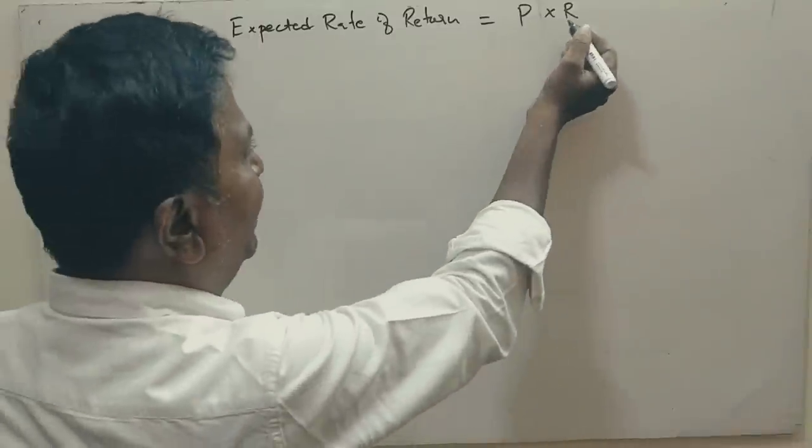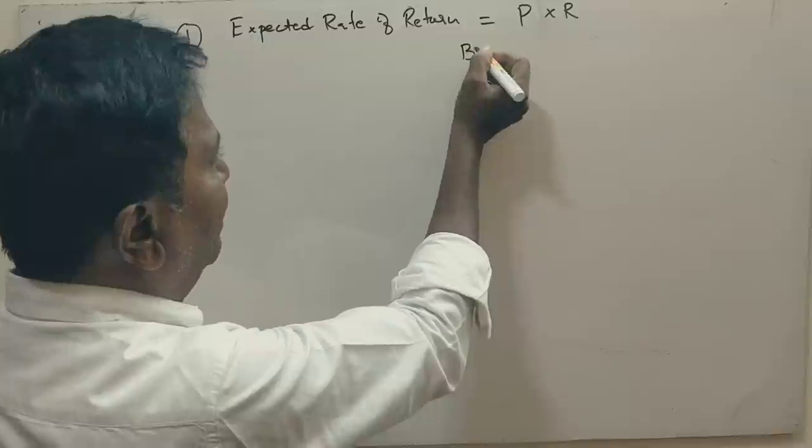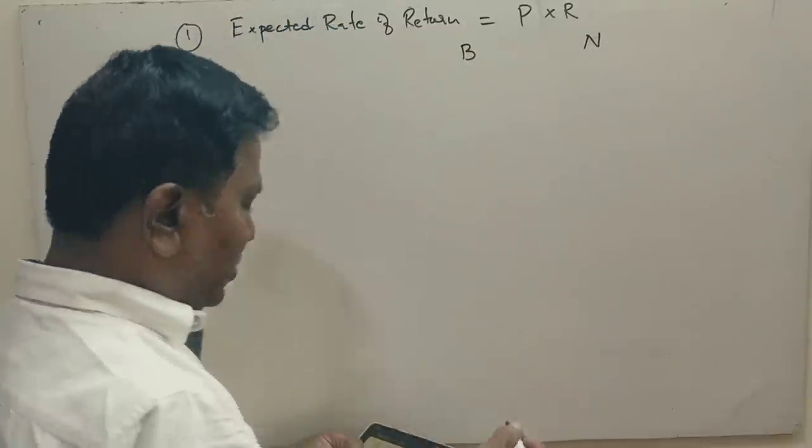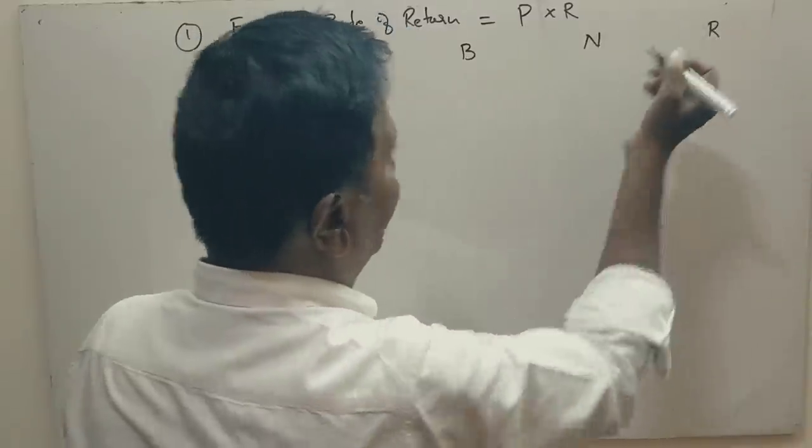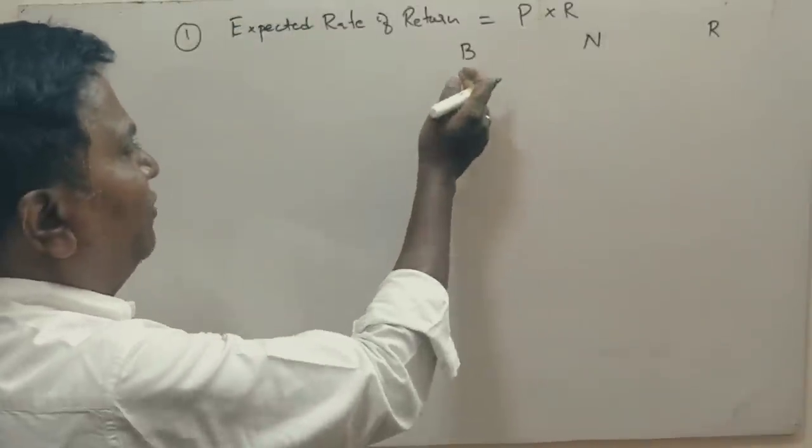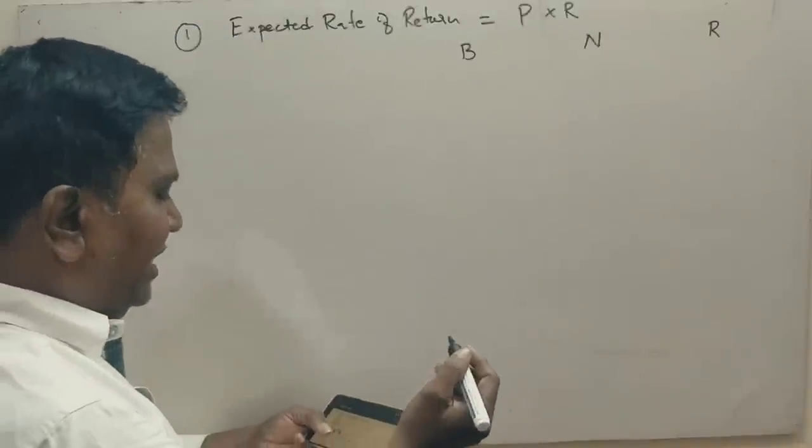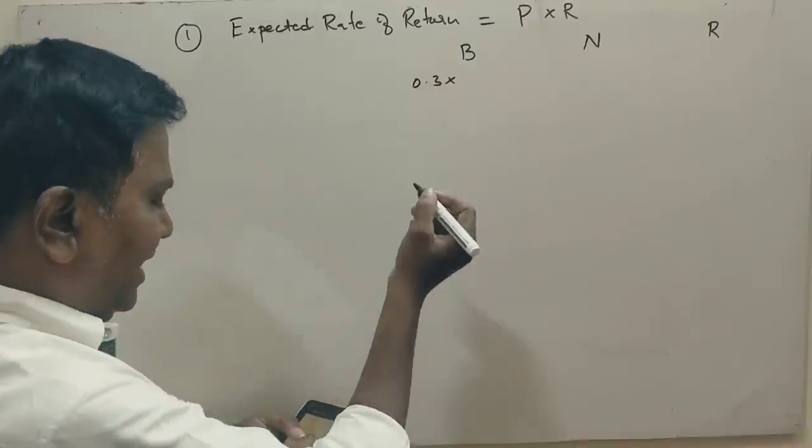See, the probability and returns in case of a boom period, in case of neutral position or a normal position, in case of a recession. Applying the formula for boom, normal and recession. What is the probability of boom period is 0.3 and the return is 40.